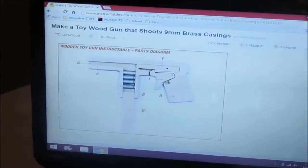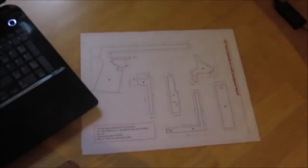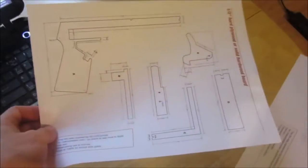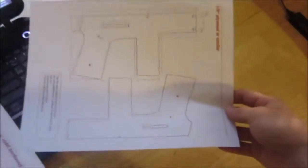So basically, there's the diagram of the gun, and what you do is on that Instructables page, you can print off these prints here, which are the parts of the gun. You have the inside components and the outside components.